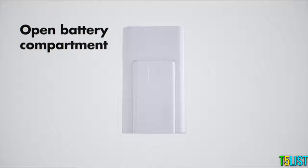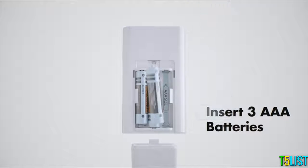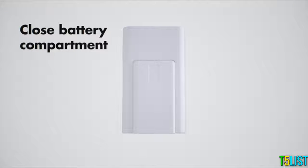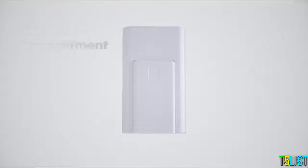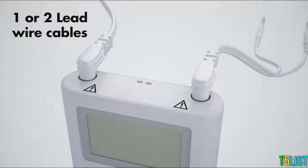Open the battery compartment on the back of the device and insert three AAA batteries in the battery compartment. Close the battery cover by carefully placing the stud into the slot. Connect one or two lead wire cables to the device's respective channel.